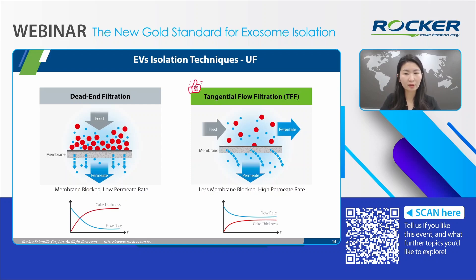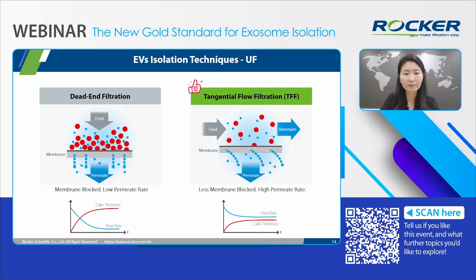Let's compare conventional filtration with TFF. First, dead-end filtration, used in centrifugal spin filters and stir cells — the sample flows vertically to the membrane and large particles accumulate, forming a cake layer that grows over time, decreasing flow rate and efficiency. Now, tangential flow filtration, TFF, also known as cross-flow filtration — the sample flows parallel to the membrane, allowing smaller molecules to pass through while large molecules are recirculated, continuously flushing the membrane. Hence, TFF minimizes membrane clogging, maintaining a steady flow rate, which is ideal for scalable applications.